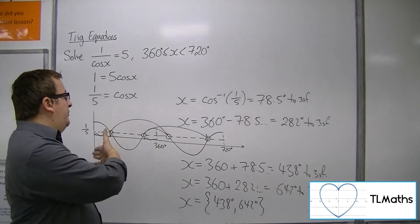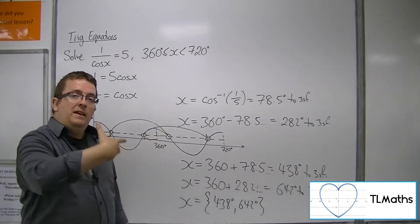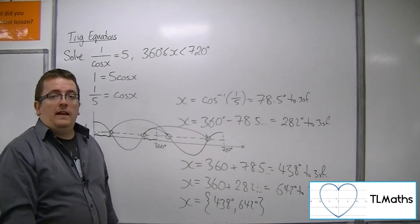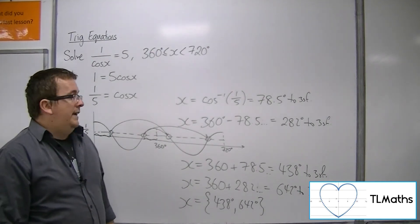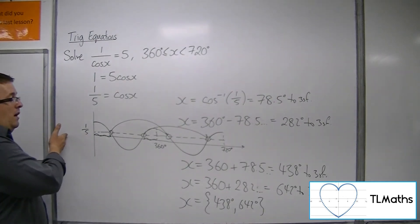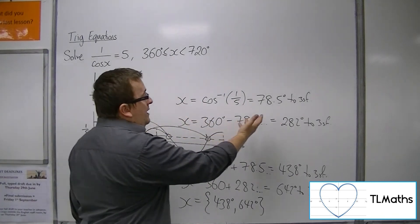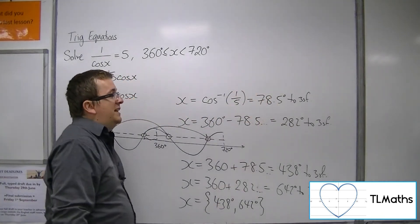I'd find the two solutions between 0 and 360 and add on the period of the function in order to get to the solutions I need. And if the solutions I needed were between minus 360 and 0, I would do exactly the same trick, but I would subtract 360 from both of these.